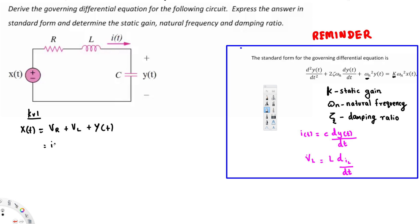We can replace V_R with I(t)·R, since V = IR. Then for V_L, we use the relation V_L = L · dI_L/dt. Substituting, we get: X(t) = I(t)·R + L · dI_L/dt + Y(t).